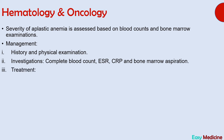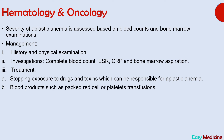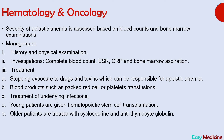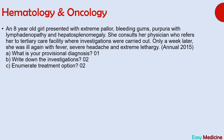Management of aplastic anemia begins by stopping exposure to drugs and toxins responsible for the condition and providing blood products such as packed red cells or platelet transfusions as needed, and treating underlying infections. Young patients are treated with hematopoietic stem cell transplantation; older patients are treated with immunosuppressants such as cyclosporine and antithymocyte globulin. Aplastic anemia can evolve into paroxysmal nocturnal hemoglobinuria, myelodysplastic syndromes, and acute myeloid leukemia.